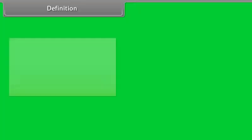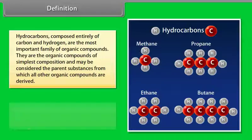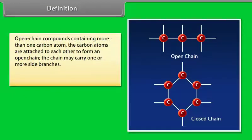Definition: Hydrocarbons are composed entirely of carbon and hydrogen. They are the most important family of organic compounds, the organic compounds of simplest composition, and may be considered the parent substances from which all other organic compounds are derived. The hydrocarbons are conveniently classified into two major groups: open chain and cyclic. Open chain compounds containing more than one carbon atom, the carbon atoms are attached to each other to form an open chain.